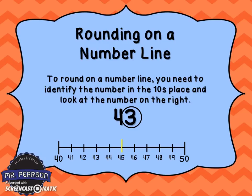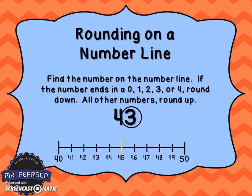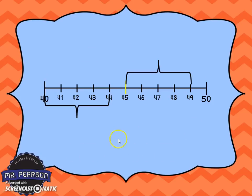So you can see here we have the number 43. We're going to look at the 4 in the tens place, and the 3 is the number on the right. Now we're going to find that number on the number line. If the number ends in a 0, 1, 2, 3, or 4, we're going to round it down to the smaller 10. And if it's 5, 6, 7, 8, or 9, then we would round it up to the higher 10.